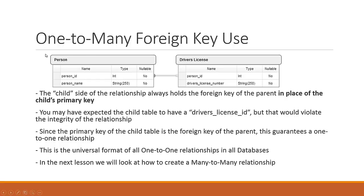Since the primary key of the child table is the foreign key, this guarantees a one-to-one relationship. For example, person ID 1 is Trevor Page, and their driver's license maps back to person ID 1. If we add a second person like John Doe as person ID 2, they get a separate driver's license entry with person ID 2. There's no way for any driver's license to map back to multiple people, or vice versa.